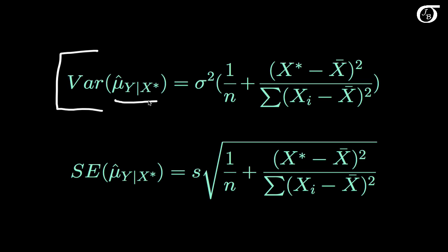The only thing that changes when we change x is one quantity in the numerator. This quantity is smallest when x star equals x-bar — when the x value of interest equals the mean of x — and it gets greater the farther that x value is from the mean of x. Since sigma squared is not a known quantity, we estimate it with s squared. We then take the square root of that estimated variance and call it the standard error.